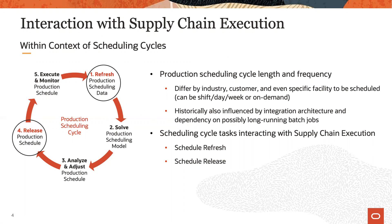However, it is important to understand that the ability to reduce the scheduling cycle length and increase the frequency of the scheduling, as well as the ability to generate a new schedule ad hoc, historically also depended on the systems integration architecture, possibly involving long-running batch jobs. Production scheduling cloud is architected to avoid such limitations. We will explain that next.